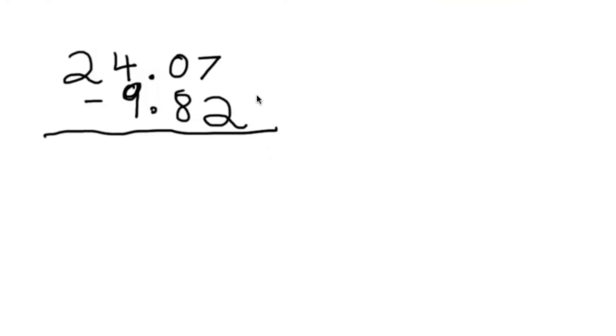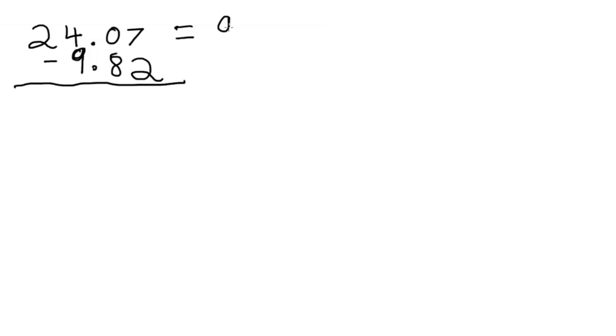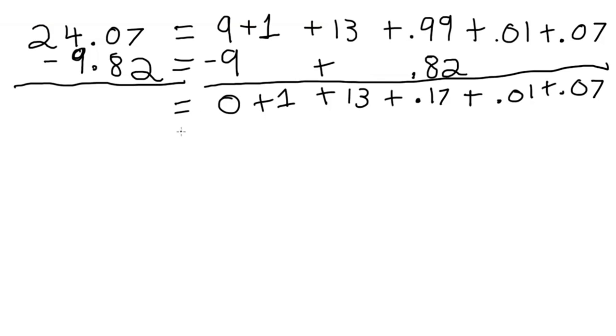Step 1, you line up the terms. Step 2, you would break down the numbers so you won't have to regroup. Step 3, then you would subtract the numbers. Step 4, you bring down the subtracting numbers and add them.